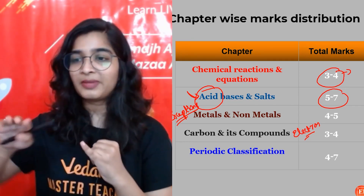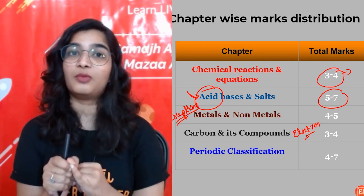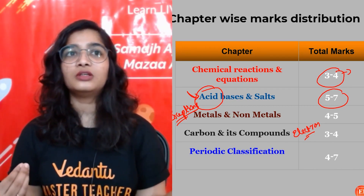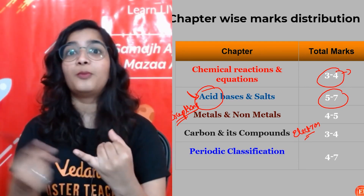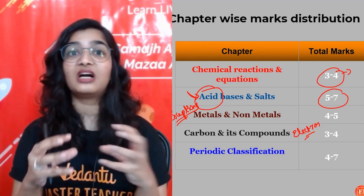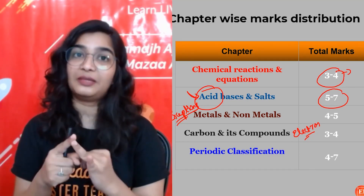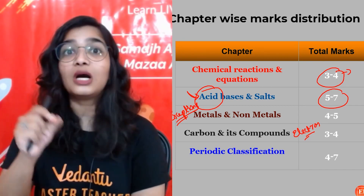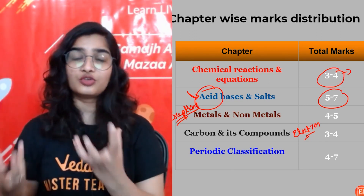Chapter 4 — Carbon and Its Compounds: electron dot structure is very, very important, especially since nomenclature has been removed from the syllabus. They might ask the electron dot structure of methane or other covalent compounds — how many covalent bonds are there in a compound, or what kind of bonding exists between carbon atoms. You should know the difference between single, double, and triple covalent bonds, and how to count all covalent bonds.